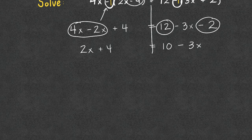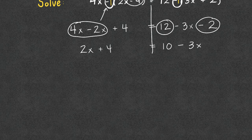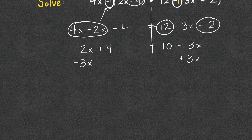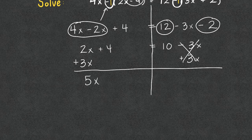Now we are going to bring all of the x's to one side and all of our constants to the other. So I'm going to add 3x to both sides. 3x and 3x, those are going to cancel, and we are then left with 5x plus 4 equals 10.